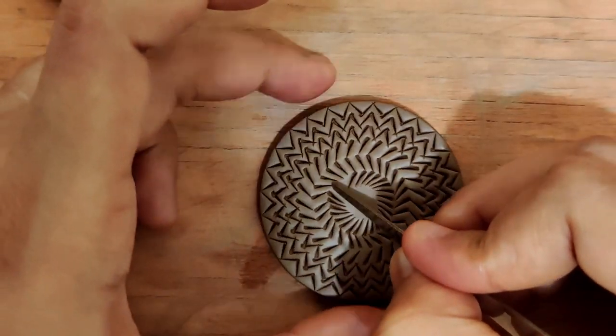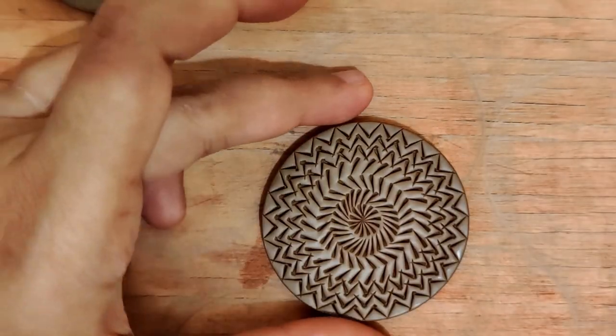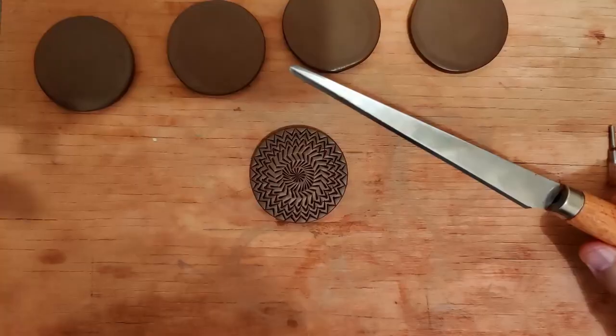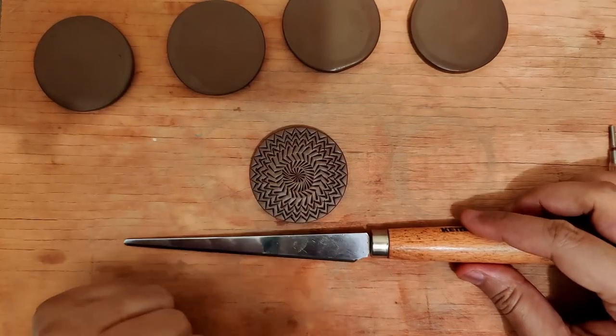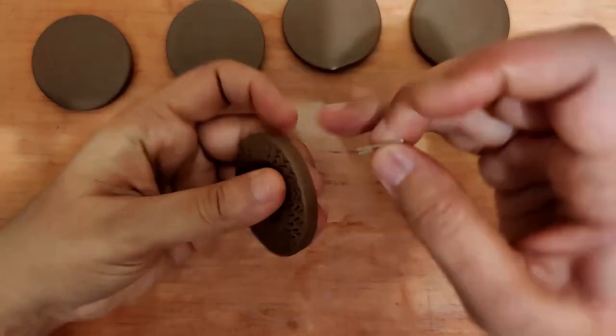I work all the way till the center, and that's it. That's the first design, all done with just a fettling knife. I'm going to be using a gauge 24 nichrome wire U-pin as a hook.